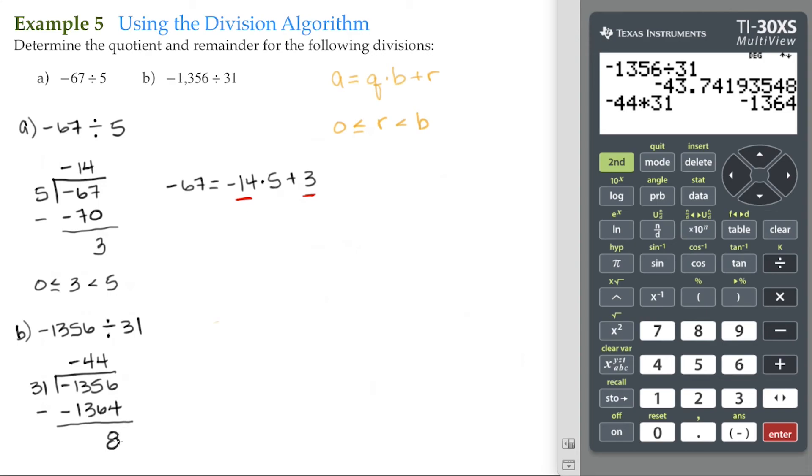8 is greater than 0 and less than the divisor, so we're done here.